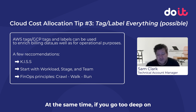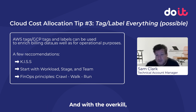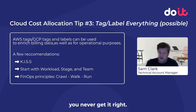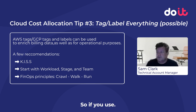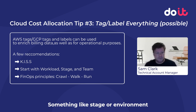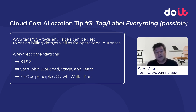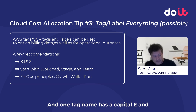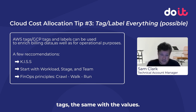At the same time, if you go too deep on those tags, you end up with too many, and with the overkill, you never get it right. Both Amazon and Google have the same challenge here in that tags are case sensitive. So if you use something like 'stage' or an environment name, and one tag has a capital E and the other one doesn't, they're going to appear as two separate tags.